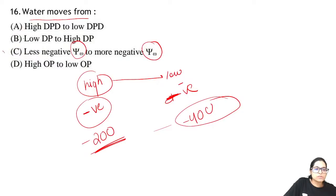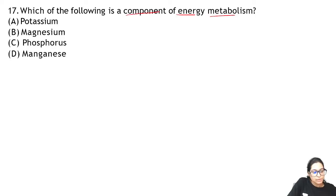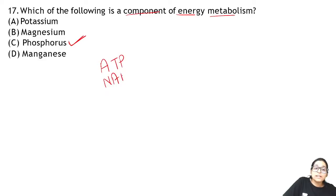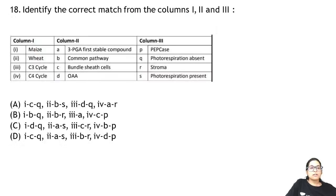Question 17: which of the following is a component of energy metabolism? Energy metabolism means ATP — NADP contains phosphorus which plays a role in energy metabolism. Question 18: identify the correct match from columns 1, 2, and 3.